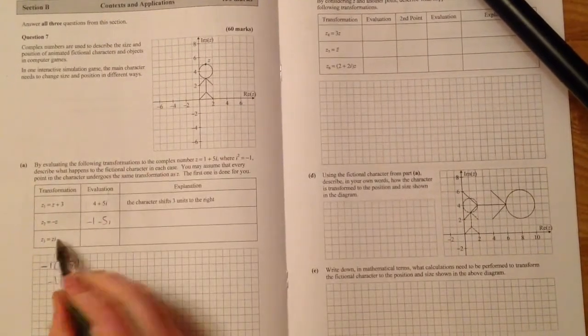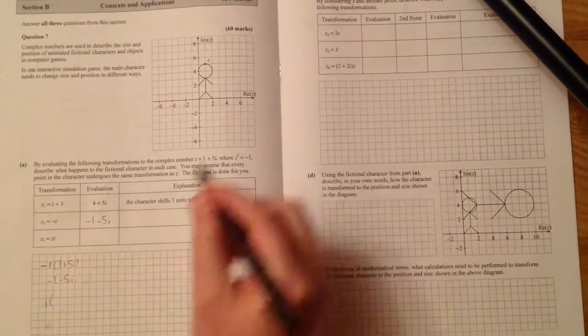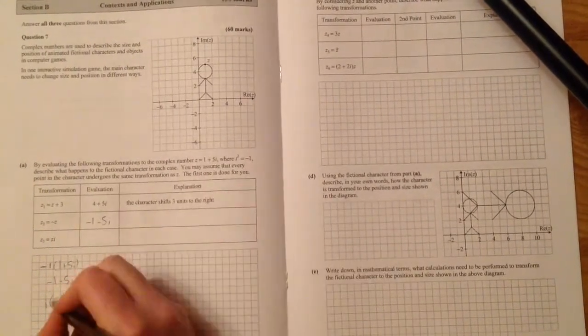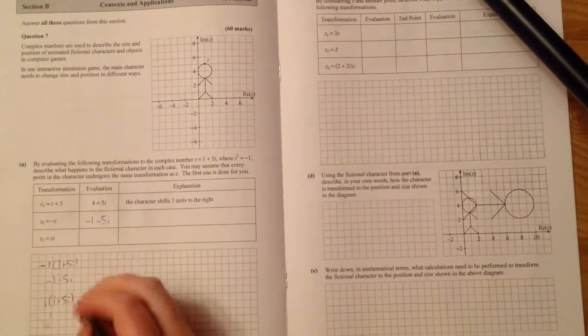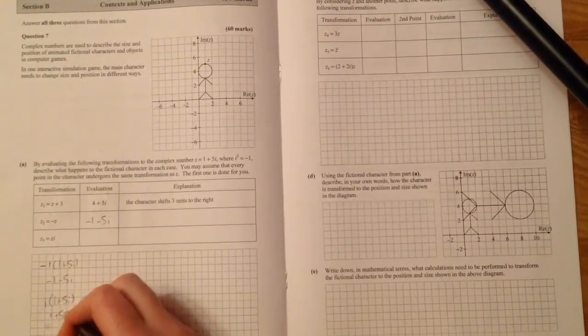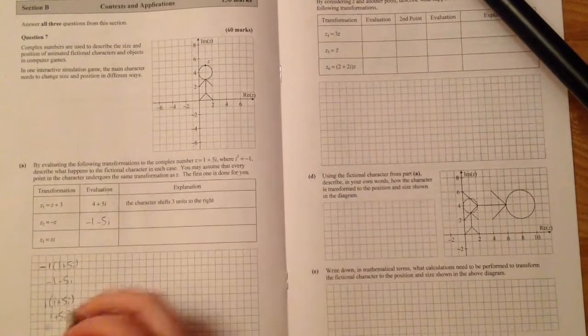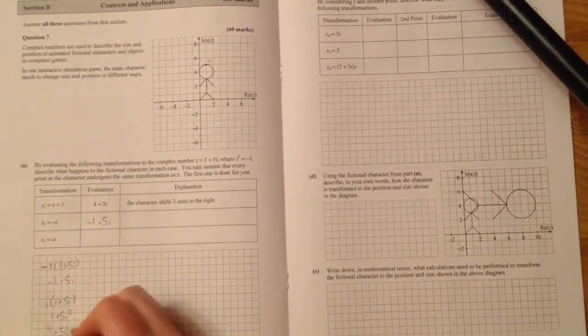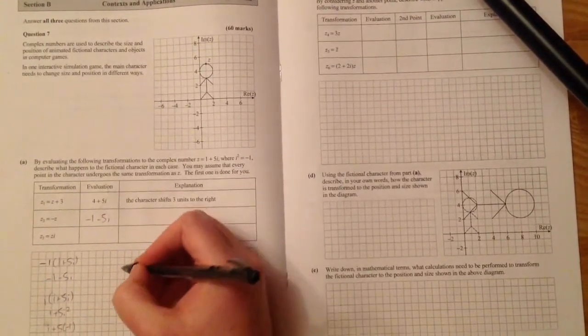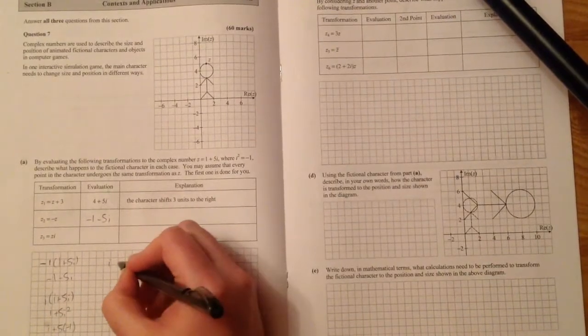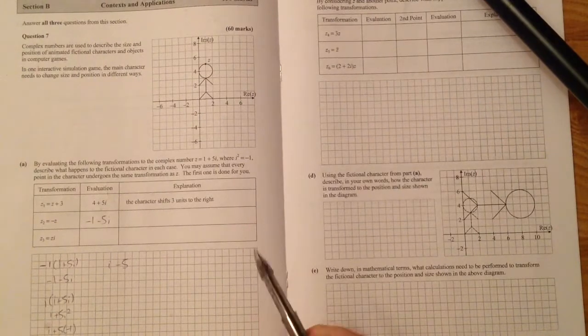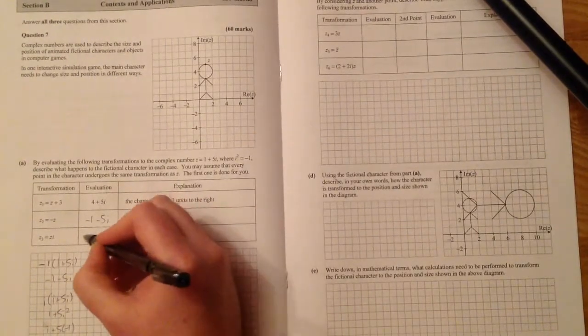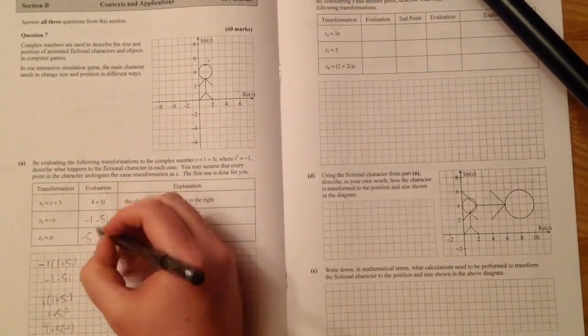And then this one is z multiplied by i. So that's i multiplied by 1 plus 5i. So 1 times i gives me i. And i times 5i gives me plus 5i squared. But i squared equals minus 1. So it's i plus 5 multiplied by minus 1. So in other words, it's going to be i minus 5. So let's have a look then. So that's going to be minus 5 plus i.